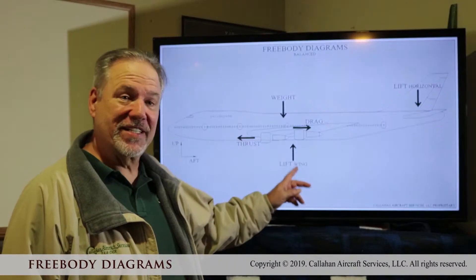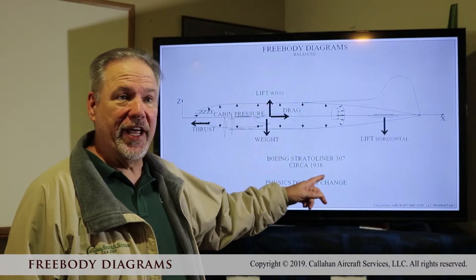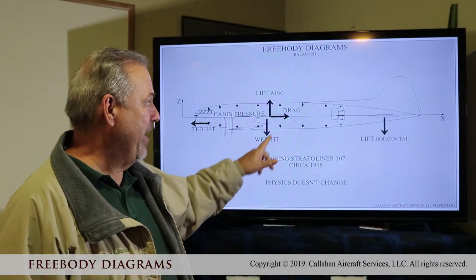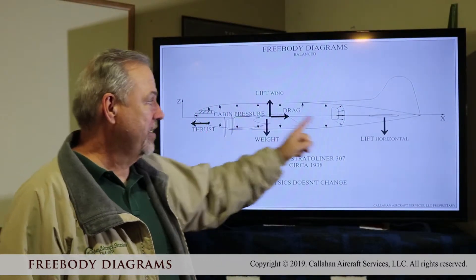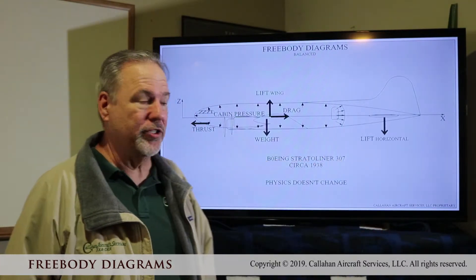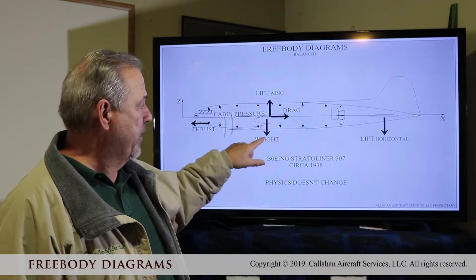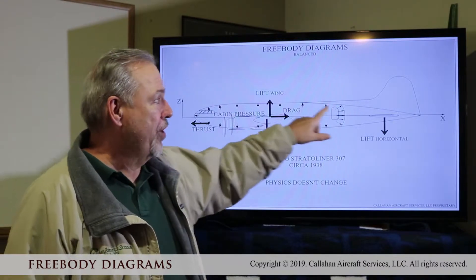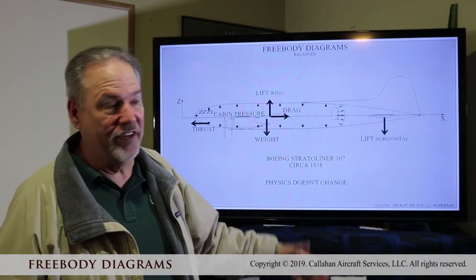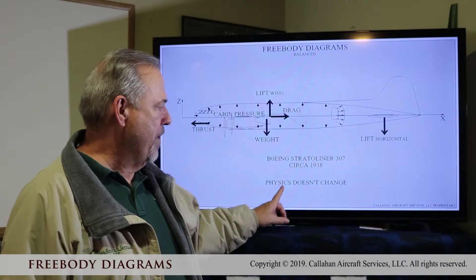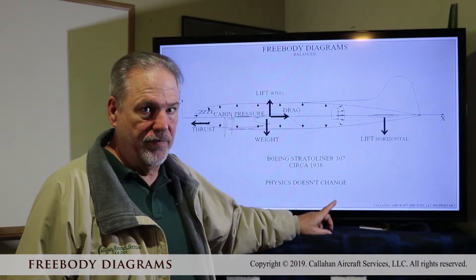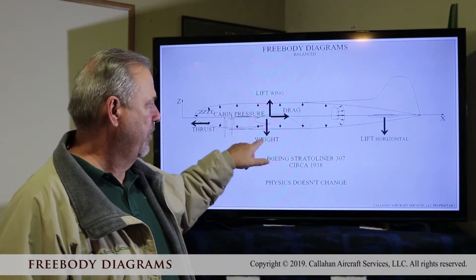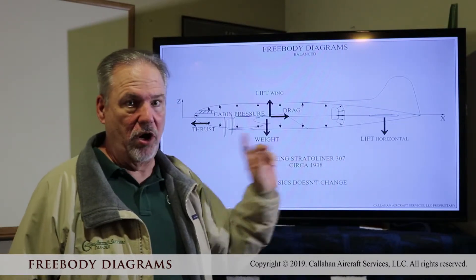We're going to go from 1969 to 1938. And notice the free body diagram hasn't changed. We have weight, drag, lift, thrust, and down load on the horizontal stabilizer. Just because I put the arrows differently, it doesn't change the free body diagram. And then we have cabin pressure — we had cabin pressure on the 747 too. Remember, physics doesn't change. The Wright brothers worked these same four components: lift, weight, drag, and thrust. And they had a long tail.